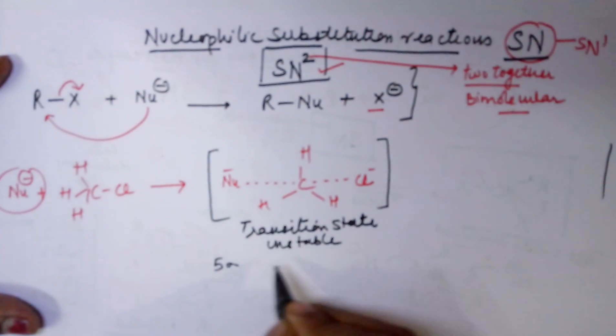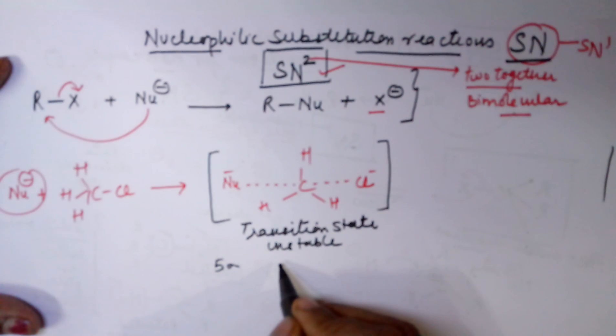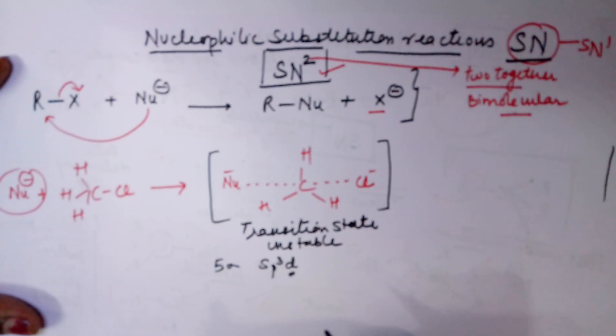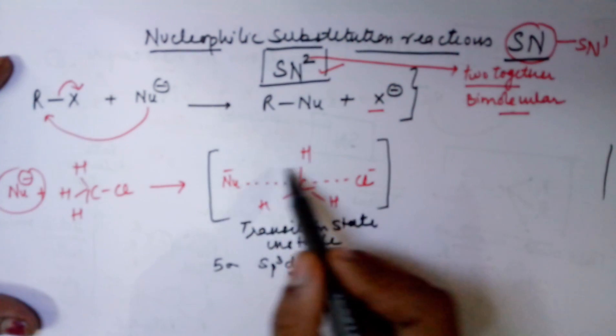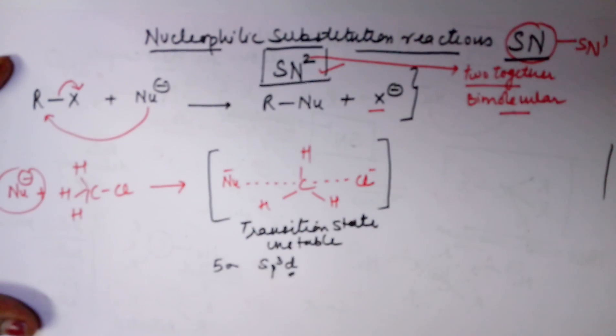Why? Five sigma bonds will require five orbitals. Five orbitals means S, P3, and you would require a D also. Whereas, carbon, being the first member of group 14, never has D orbitals. Due to absence of D orbitals, this five bonded identity is not existing.